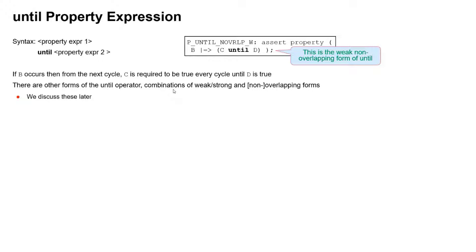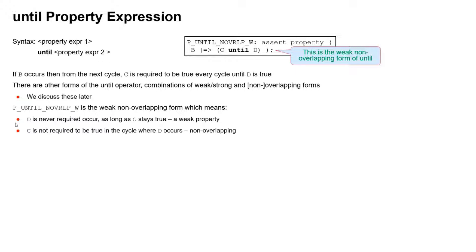This property says: if B is true, then from the next cycle, C is required to be true in every cycle until D is true. There are various other forms of this until operator — combinations of weak or strong properties and overlapping and non-overlapping forms, which we'll talk about later. What we're looking at right now is a weak, non-overlapping form of until. D is never required to occur as long as C stays true — that's a weak property. The right-hand side sequence doesn't need to complete as long as it isn't violated. C is not required to be true in the cycle where D occurs, so it's irrelevant what value C is on that cycle — that's why it's called non-overlapping.